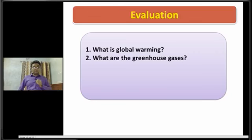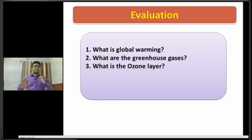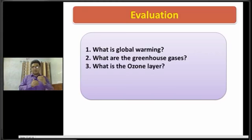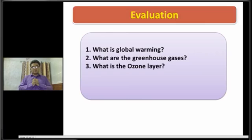Dear students, now I am going to ask you the next question: what is the ozone layer? Basically, the ozone layer is one of the layers of our atmosphere that absorbs most of the ultraviolet rays of the sun. Ultraviolet rays are not good for human health.